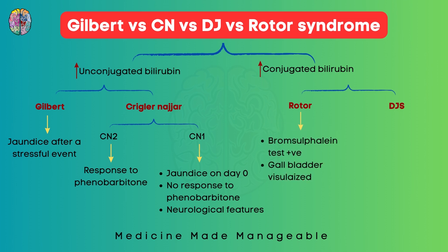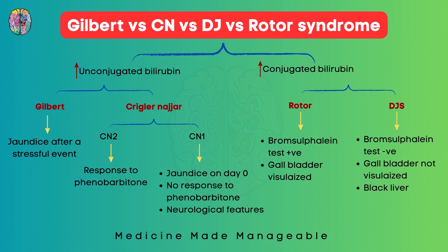If the question mentions that the Bromsulphalein test is positive or the gallbladder is visualized on oral cholecystography, think Rotor syndrome. But if the opposite is mentioned, or if the liver is described as black in color, then definitely think Dubin-Johnson syndrome.